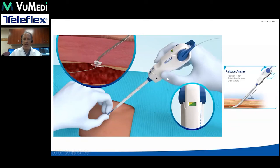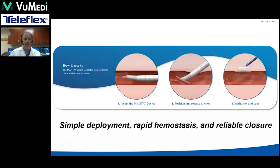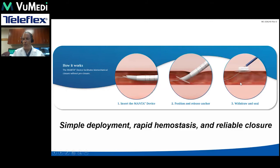At that point, we lay the device down on the patient and assess. The device is inserted into the vessel, positioned as we pull back to the depth of the original marker measured previously, we deploy the anchor, then withdraw and advance the seal. It's a very simple deployment, with rapid hemostasis and reliable closure.